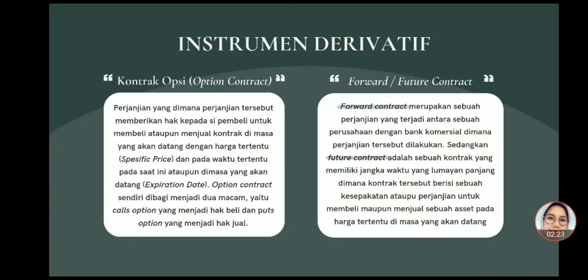Transaksi derivatif ini terdiri dari beberapa acuan pokok atau sering disebut dengan underlying, yaitu interest rate atau suku bunga, currency atau kurs tukar, commodity atau komoditas, equity, dan juga beberapa indeks lainnya. Menurut Utama, instrumen derivatif dibagi menjadi dua, yaitu option contract atau kontrak opsi dan future atau forward contract.